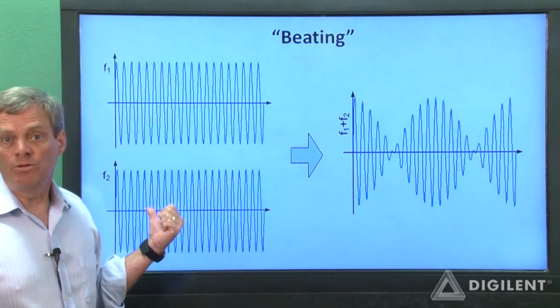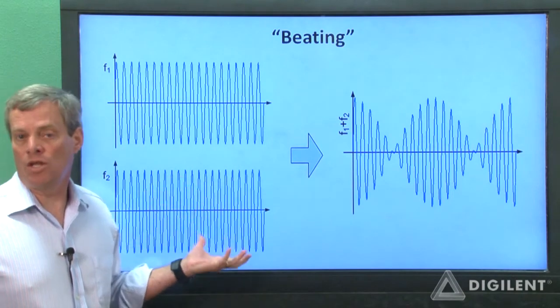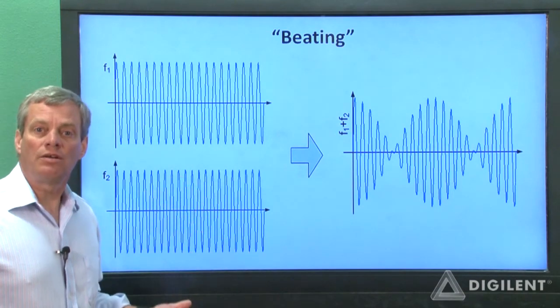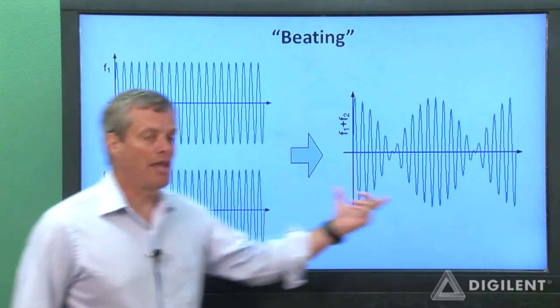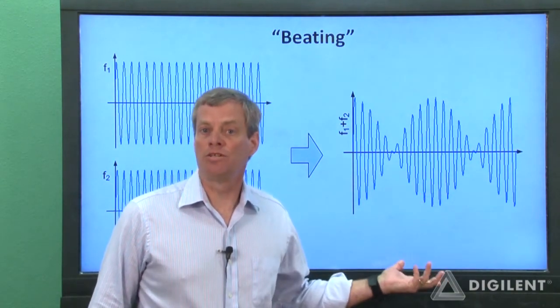If the signal's frequencies get closer together, the amplitude variation will be slower. We'll use the analog discovery waveform generator to create this signal, play it back through a speaker, and listen to the result.